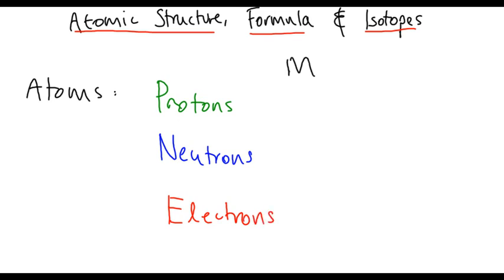These have the masses of 1 for protons and 1 for neutrons, next to nothing for electrons. And the charges are plus 1, nothing, and minus 1.